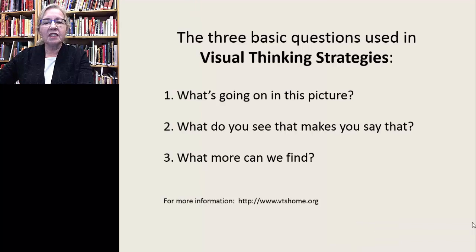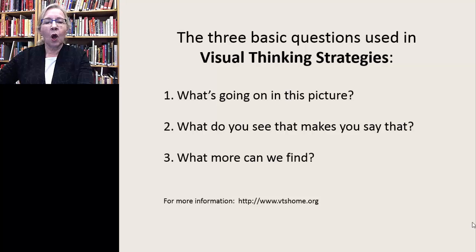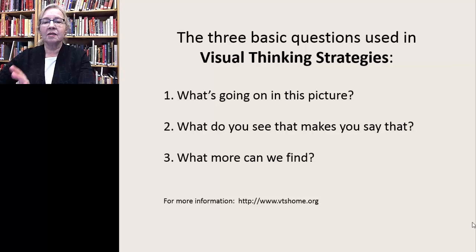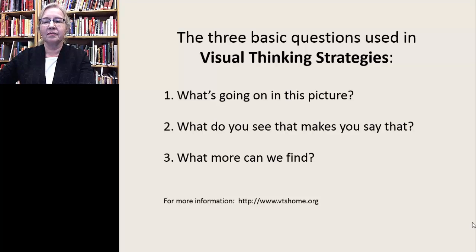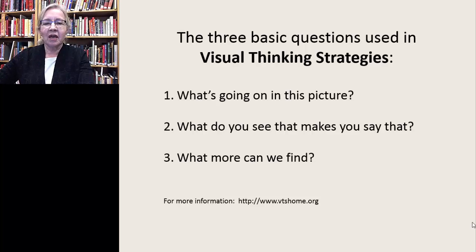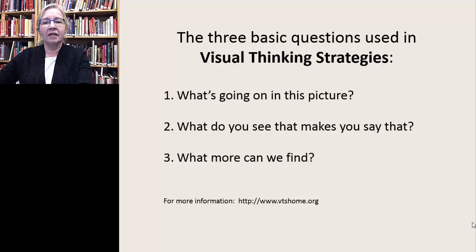We'll start with VTS — Visual Thinking Strategies. In this method, the teacher uses three open-ended questions over and over. The teacher may paraphrase student responses, but is not supposed to say anything like 'that's a great observation.' Here are the questions: What's going on in this picture? What do you see that makes you say that? And what more can we find?